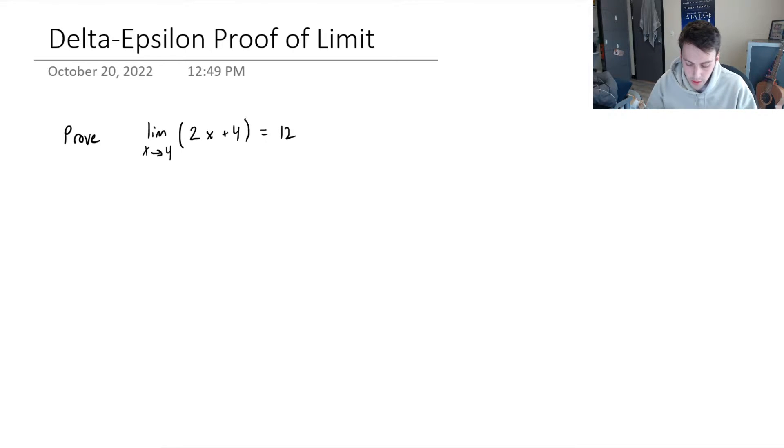Hey everyone, so in this video I'd like to go over the delta-epsilon definition of a limit to prove a simple limit. So this question says that it wants you to prove the limit as x approaches 4 of the function 2x plus 4 equals 12.